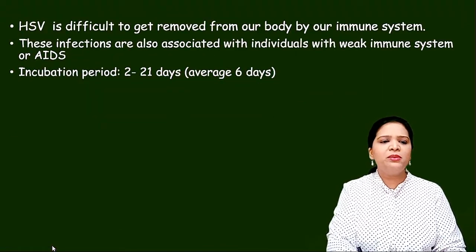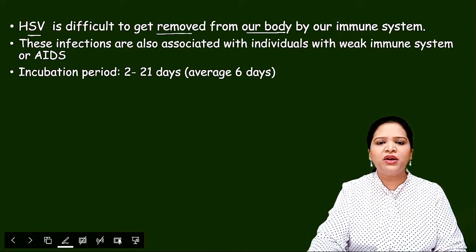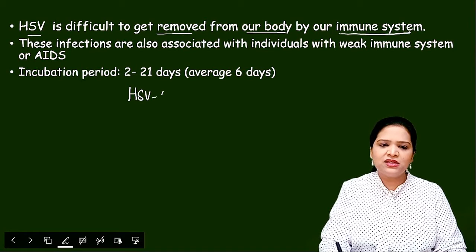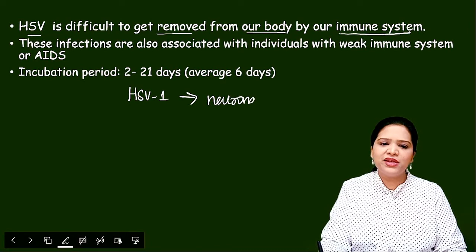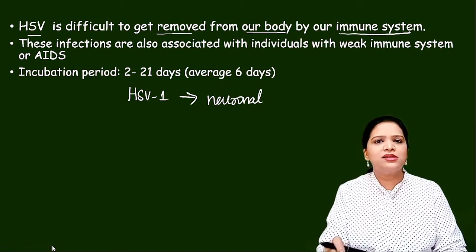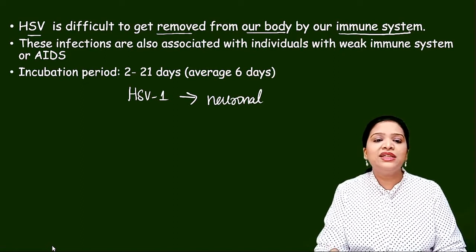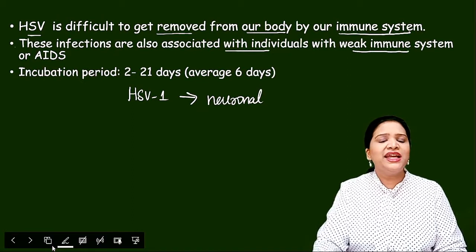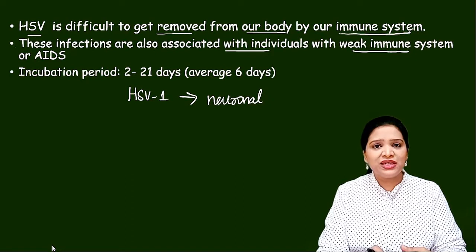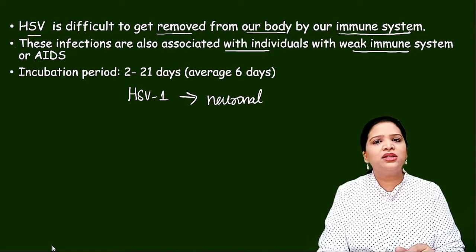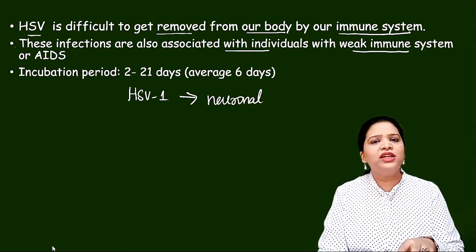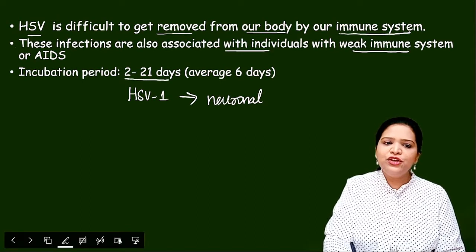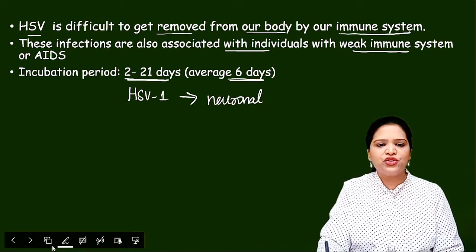Herpes infection is difficult to eliminate because the virus hides in neuronal cells, making it very difficult for the immune system to clear the infection. This infection is also associated with individuals with weak immune systems — AIDS patients, cancer patients, transplant patients on steroidal drugs, and diabetic patients are all at higher risk. The incubation period is 2 to 21 days, with an average of 6 days.